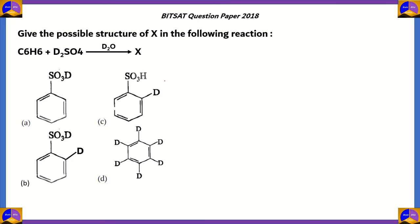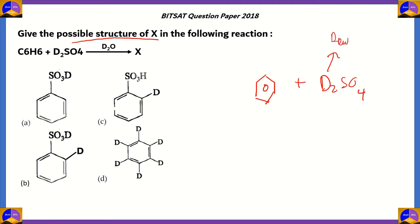The next question asks us to find the possible structure of X in the following reaction: benzene (C₆H₆) reacts with D₂SO₄. D here is deuterium, which is basically hydrogen with two neutrons instead of one — an isotope of hydrogen with the same atomic number but a different mass number. The reaction takes place in heavy water with no other reagent present.